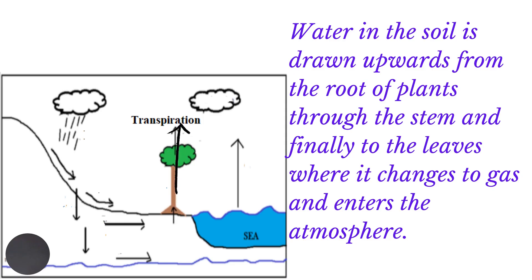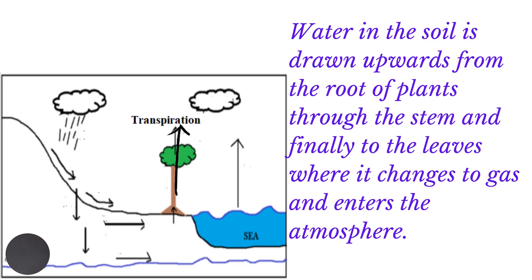Water in the soil may be drawn upwards from the roots of plants, through their stems and to their leaves, where the water is converted to water vapor and enters the atmosphere. This process is called transpiration.